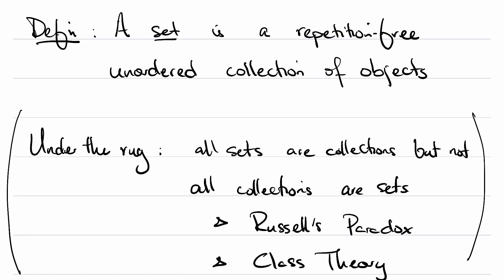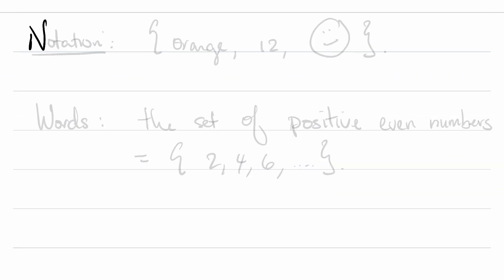In terms of notation, we're going to have a horizontal list with entries separated by commas, framed by beginning and ending curly braces. For example, this is the set containing the word orange, the number 12, and this drawing of a smiley face.